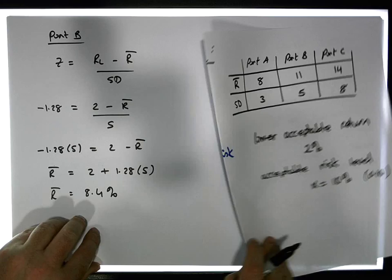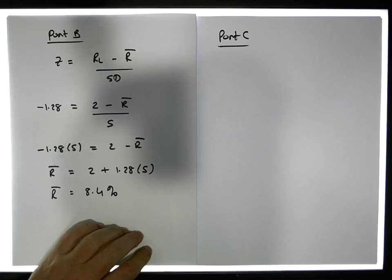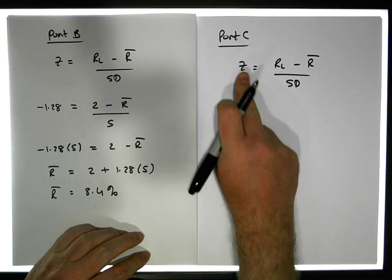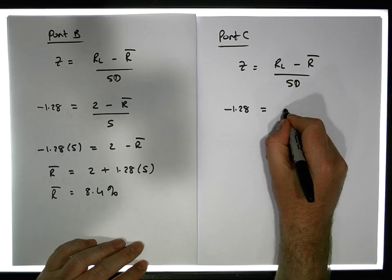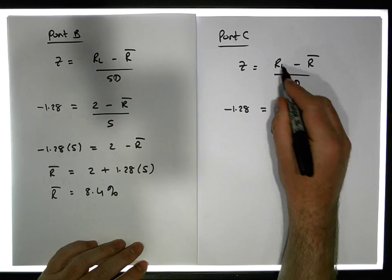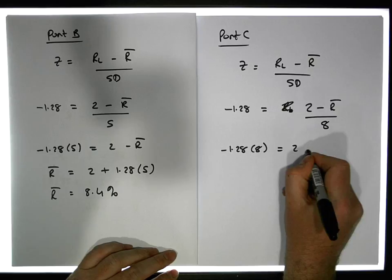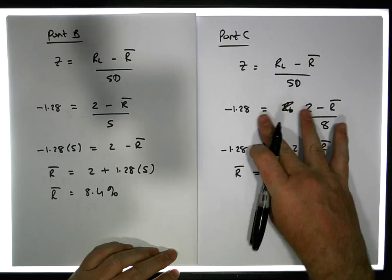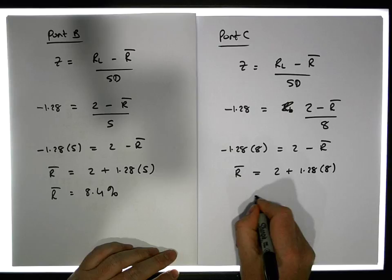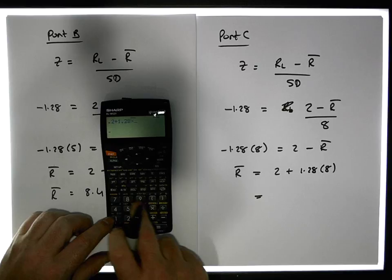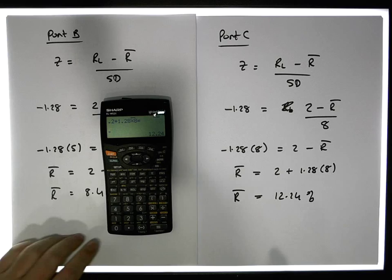What about Portfolio C? Once again, Z equals RL minus R̄ over SD. Z is based on the risk level of 10%, which is minus 1.28 standard units. RL, the minimum return level we're willing to accept, is 2%, and the standard deviation is 8. So minus 1.28 times 8 equals 2 minus R̄, which tells us R̄ equals 2 plus 1.28 times 8, giving us 12.24%. So R̄ is 12.24%, and Portfolio C satisfies this condition as well.